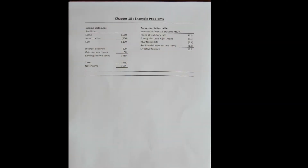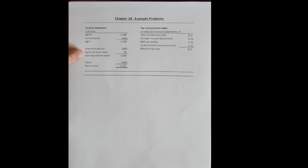Let's look at an example of a simple firm with a simple income statement, starting at EBITDA. They've got amortization, earnings before interest and taxes, they pay some interest, they have a gain on asset sales — meaning they sold an asset for more than what it was listed on their books — then earnings before taxes, then taxes, followed by net income.